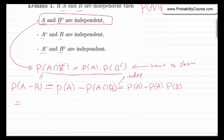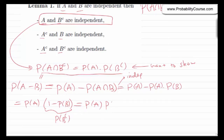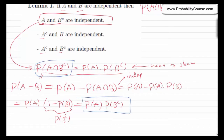Factoring out probability of A, we obtain probability of A times one minus probability of B, which equals probability of A times probability of B complement. So we proved that probability of A and B complement equals probability of A times probability of B complement, which is exactly what we wanted to prove. Therefore A and B complement are independent. Similarly, we can show that A complement and B are independent, and A complement and B complement are independent.